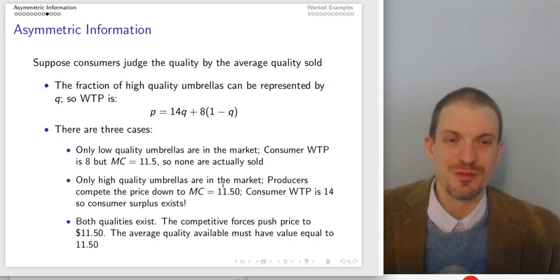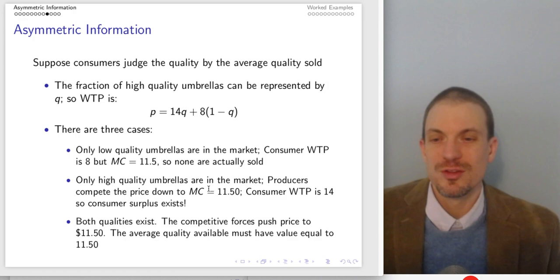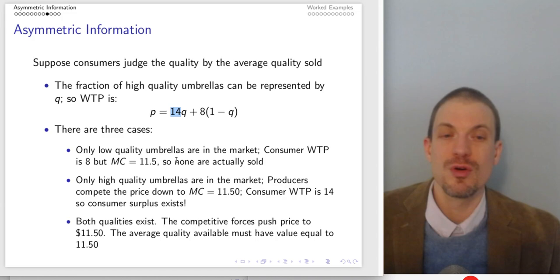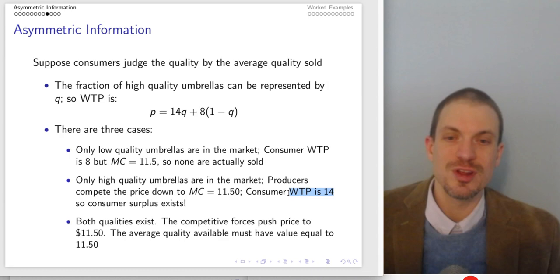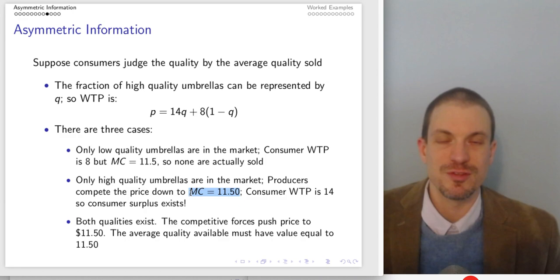Suppose only high-quality umbrellas were in the market. That would be good for consumers — producers would compete down the price to the marginal cost of $11.50 from consumers' willingness to pay of $14. There would be consumer surplus between the willingness to pay of $14 and the price of $11.50 when price equals marginal cost.